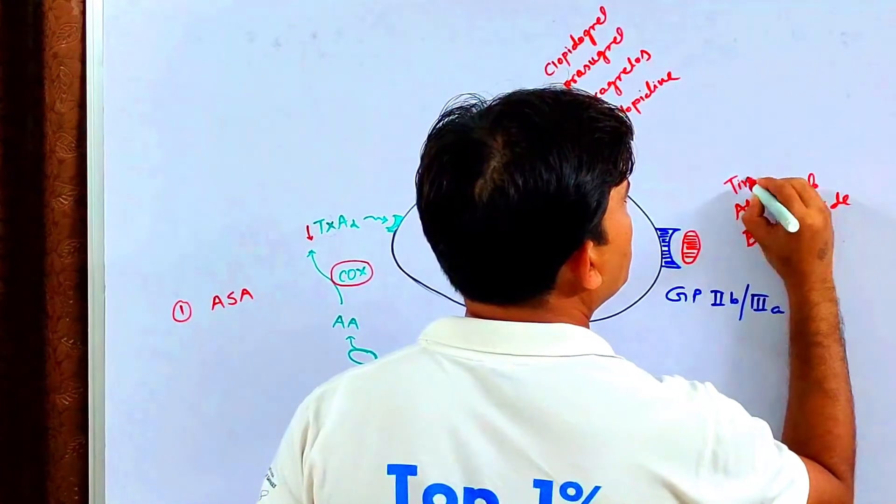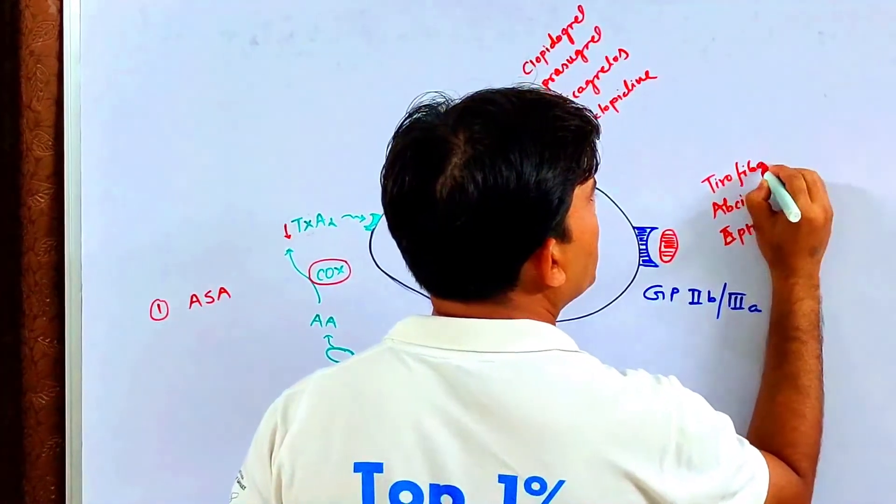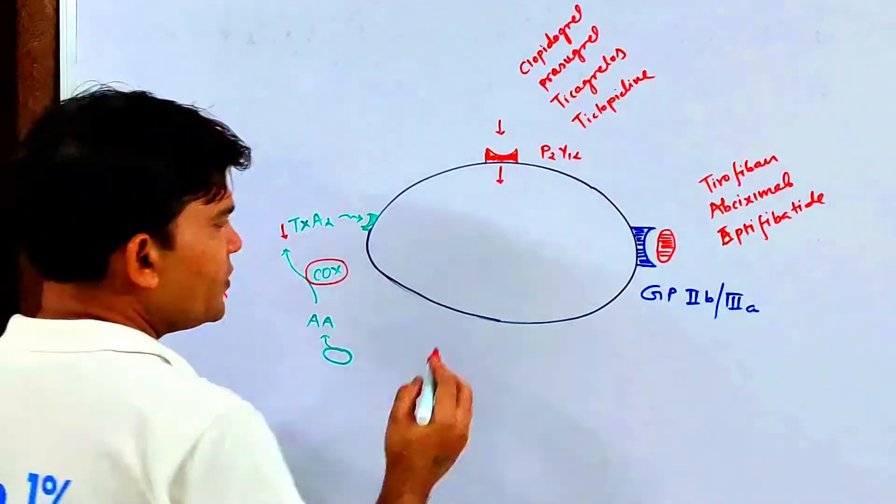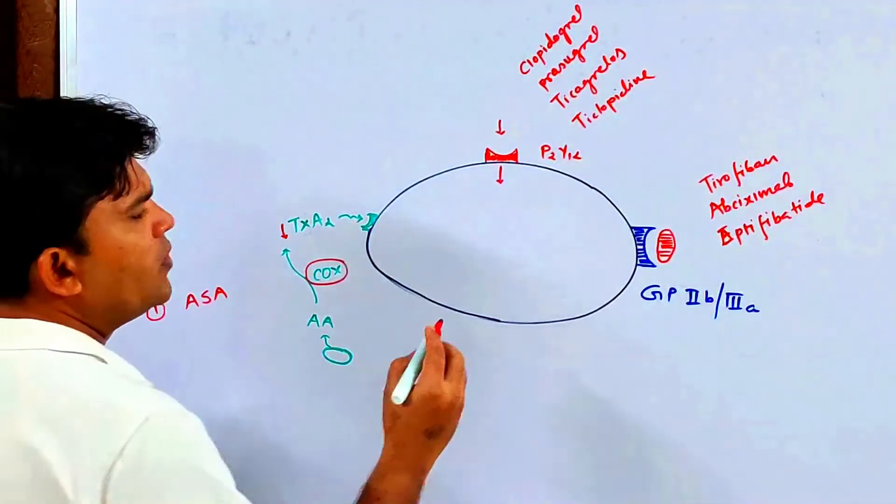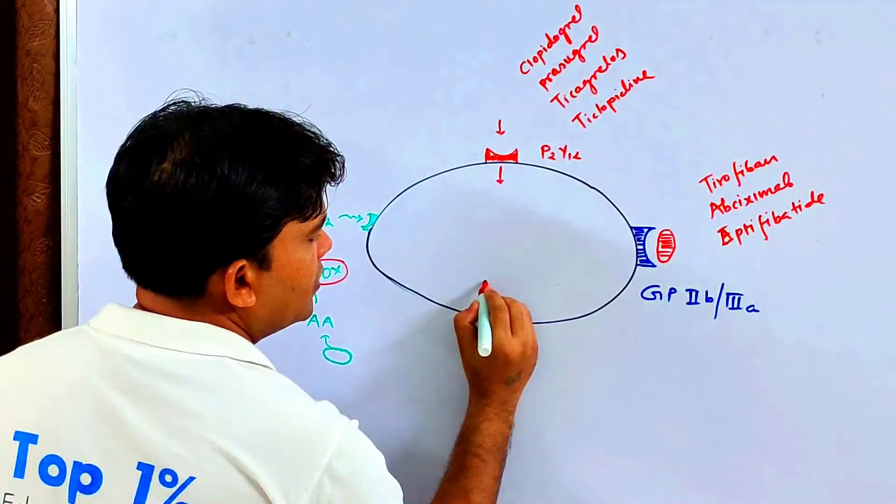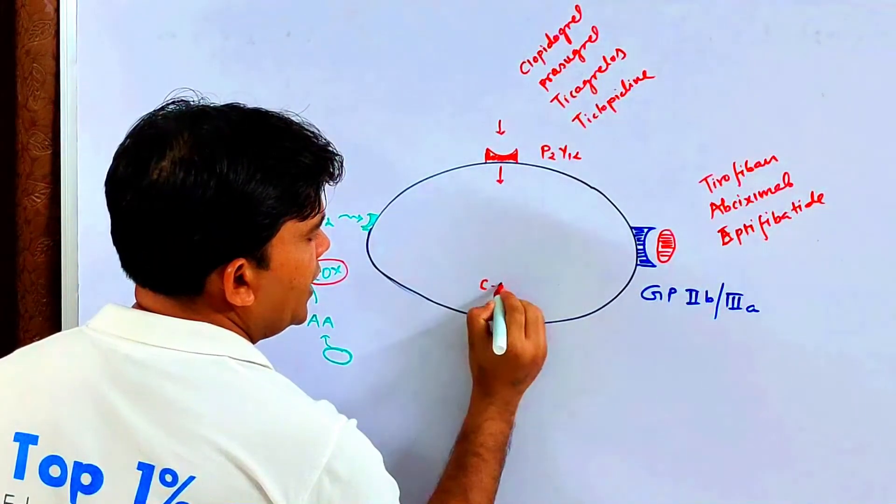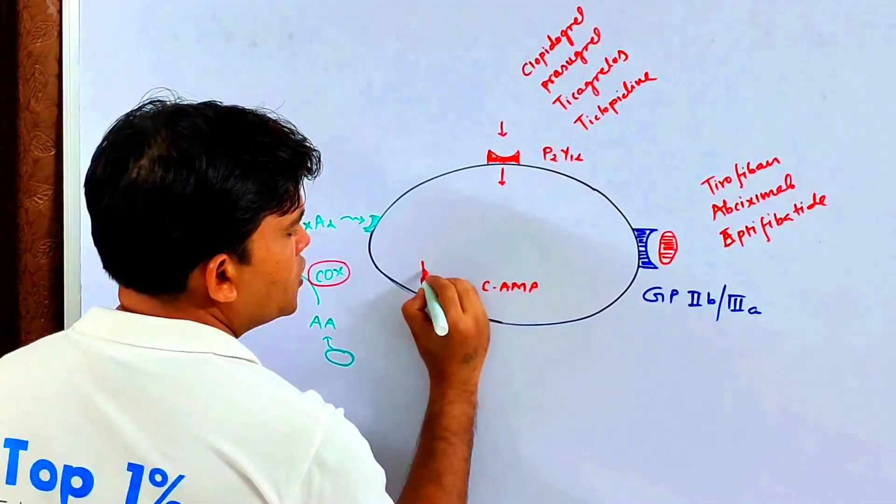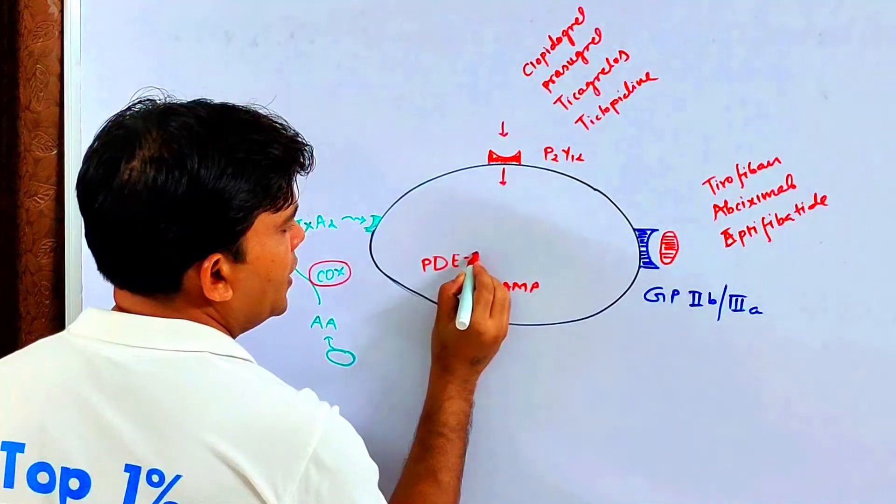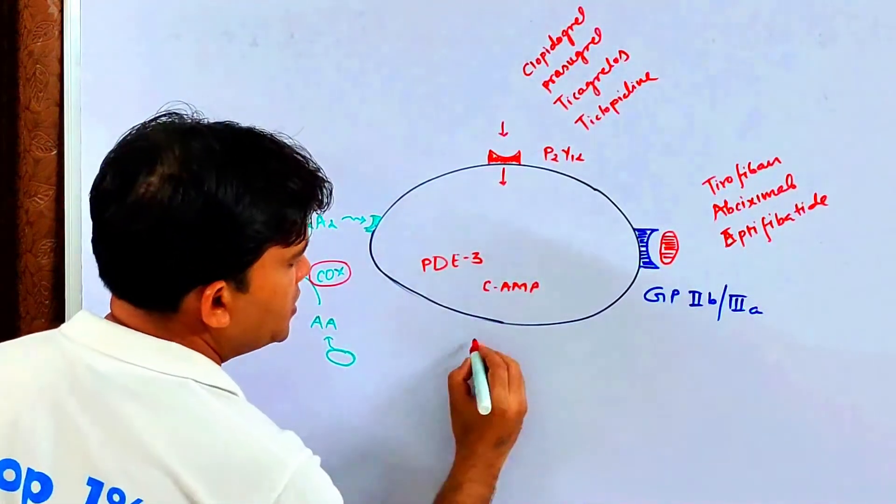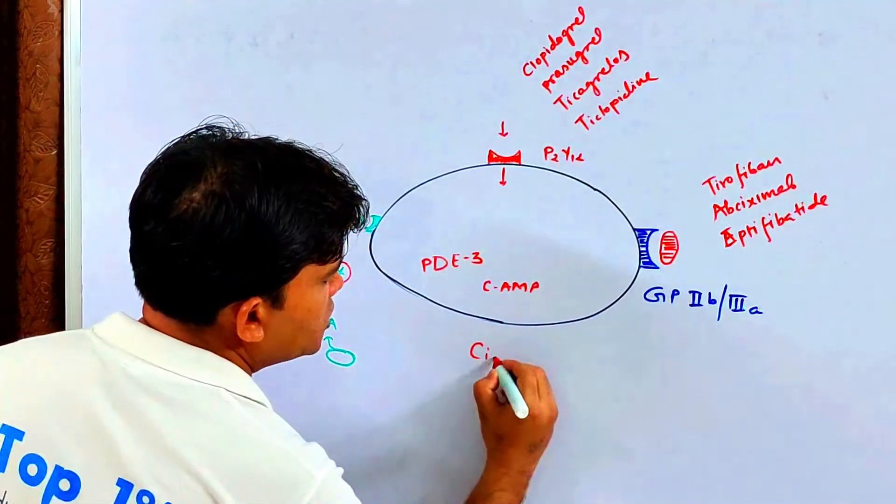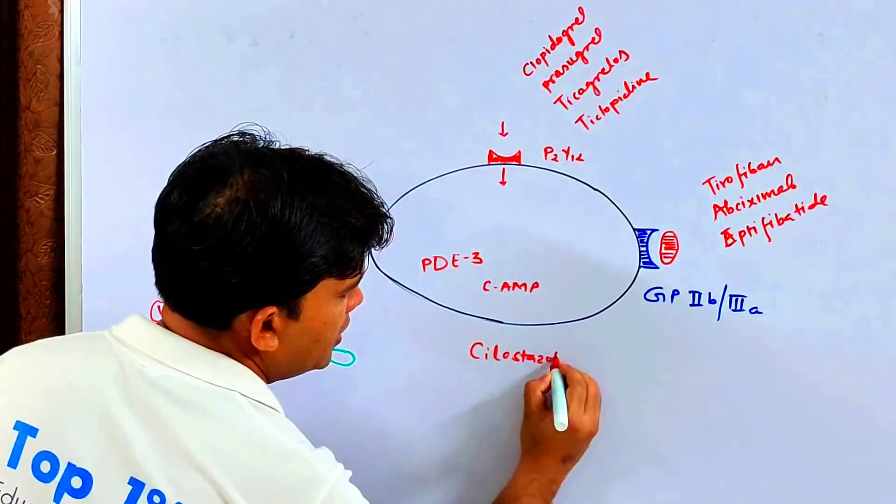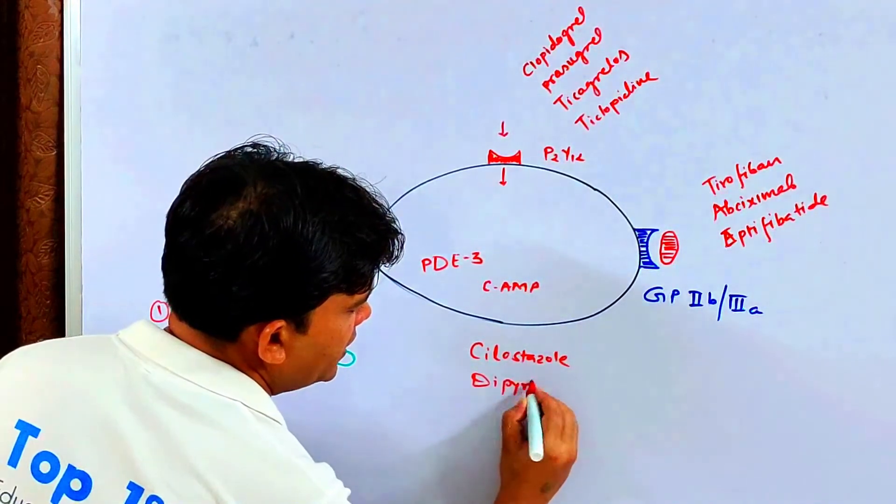And the fourth group that was the cyclic AMP reducer, or drugs that were phosphodiesterase-3 inhibitors, and those were cilostazol and dipyridamole.